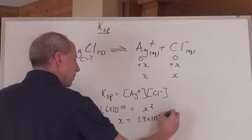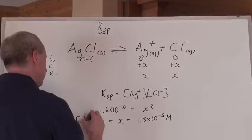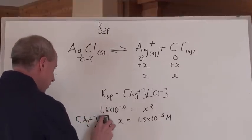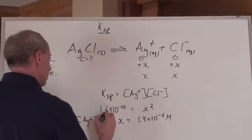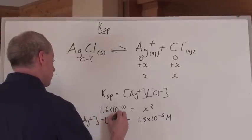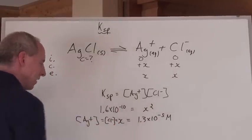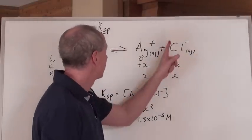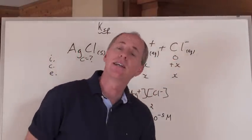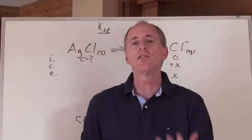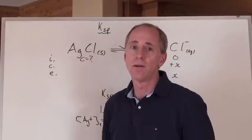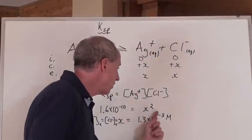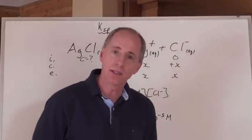What is that? That's moles per liter. Of what? That's the concentration of the Ag positive and the concentration of the Cl negative at equilibrium. Those are the concentrations there. And since it's a 1 to 1 to 1 ratio, guess what you just found out? That the concentration of AgCl in solution at equilibrium is 1.3 times 10 to the negative 5 moles per liter.